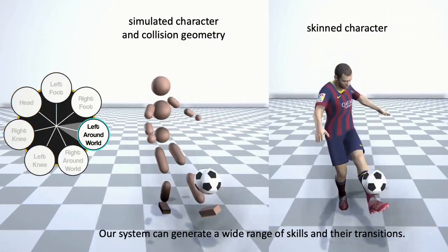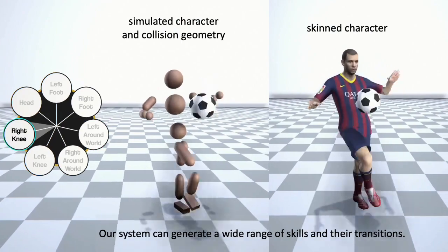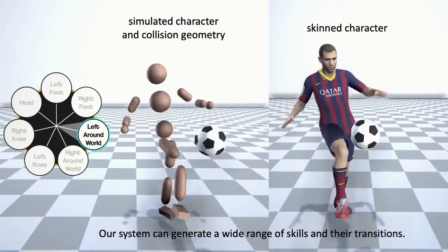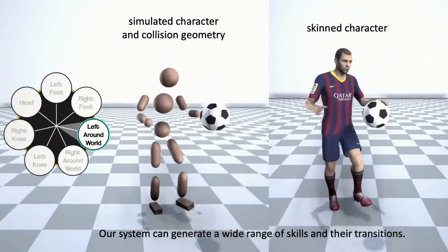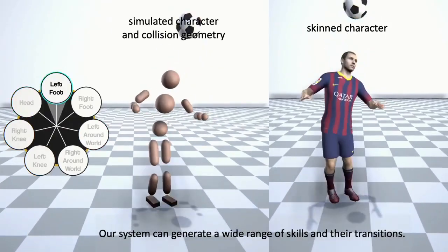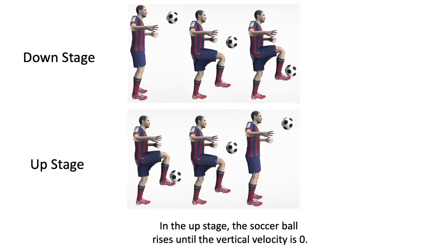Our system can generate a wide range of skills and their transitions. We divide a juggling skill into two stages: in the down stage, the soccer ball falls until it hits a body part; in the up stage, the soccer ball rises until the vertical velocity is zero.